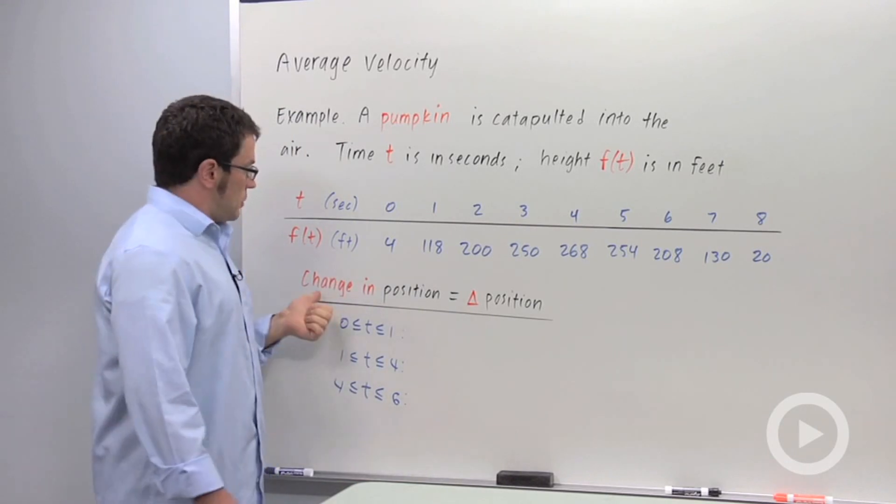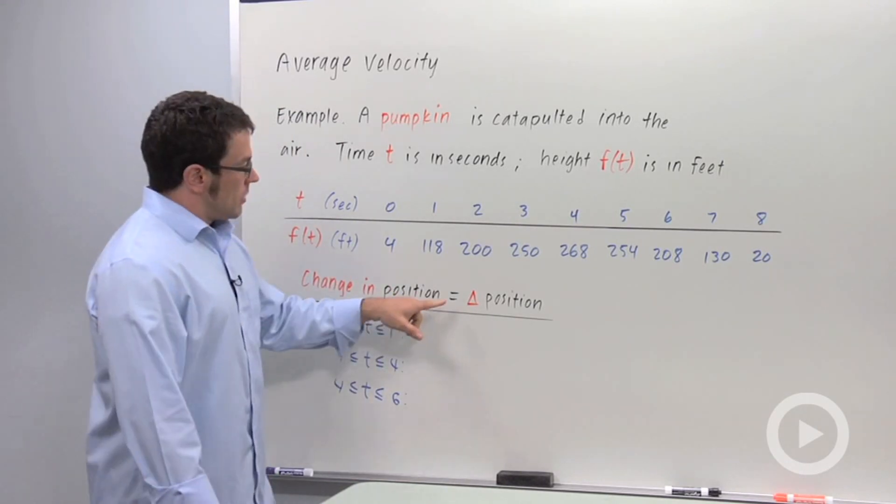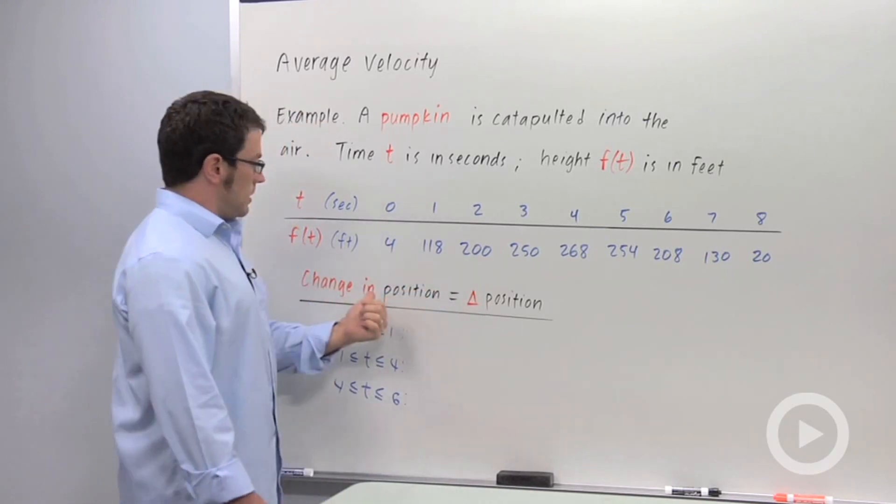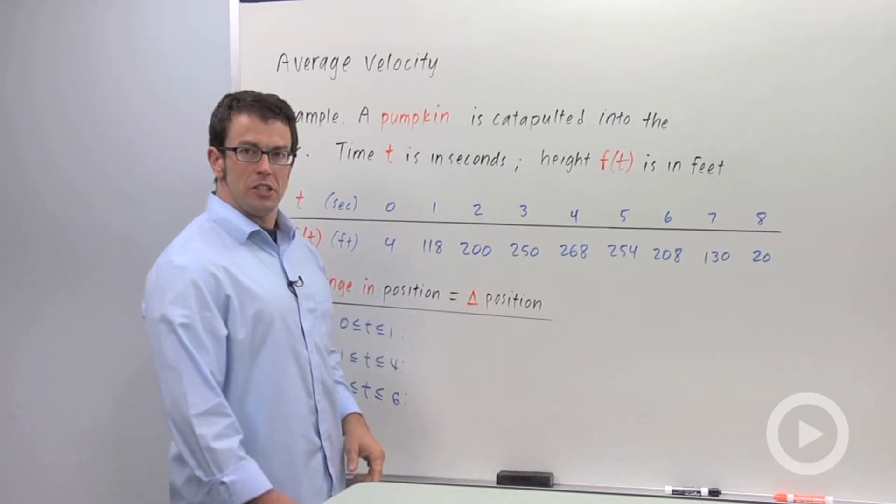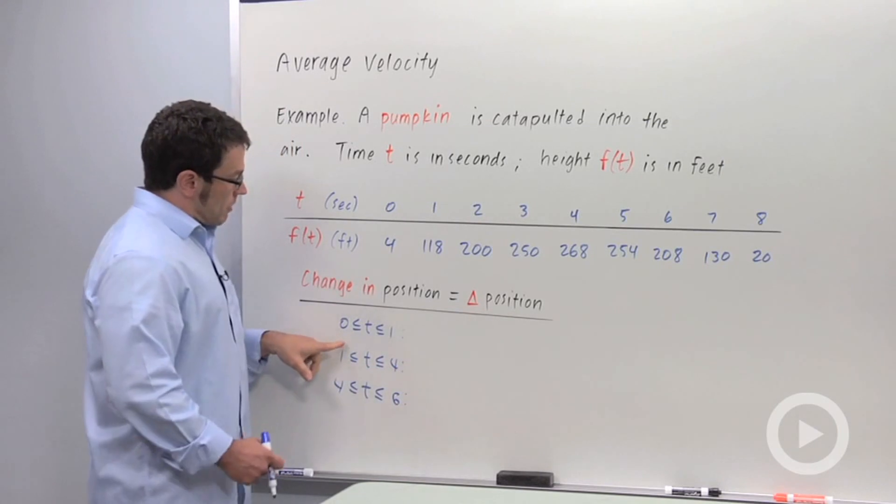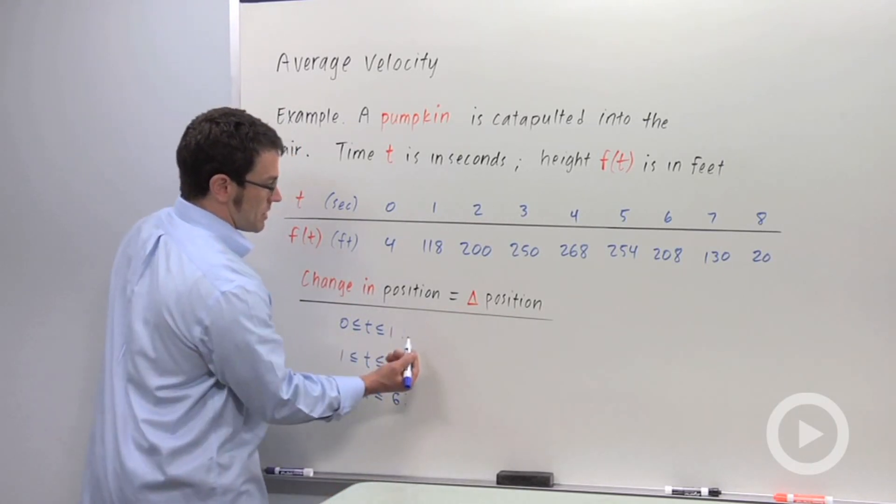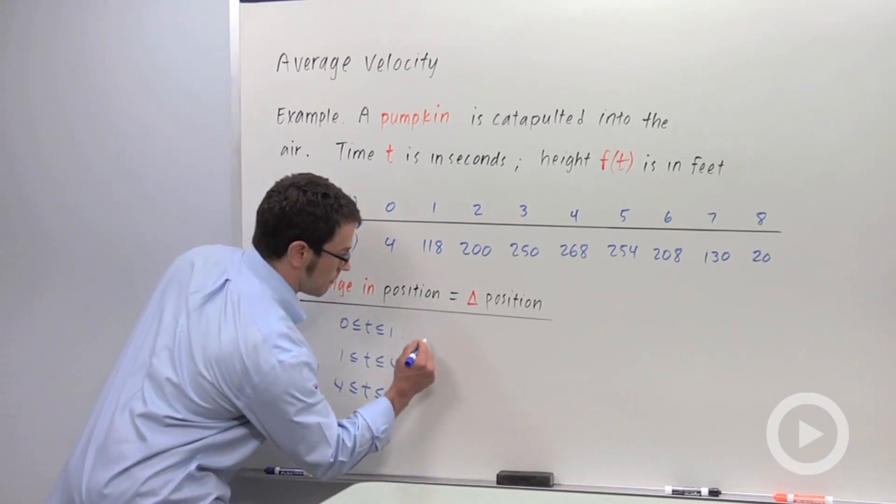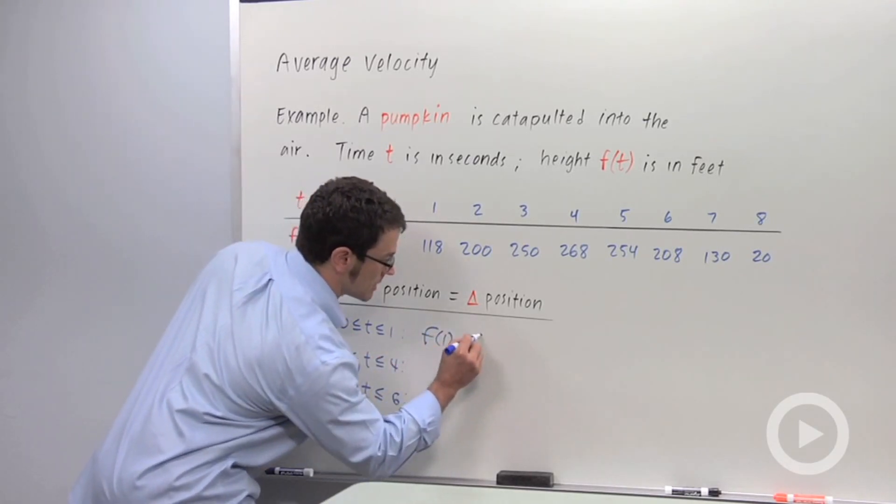Now I want to calculate some changes in position. Get used to this symbol in calculus. The delta means change in. So delta position means change in position over the interval from 0 to 1. The change of position on the interval from 0 to 1 would be f of 1 minus f of 0.